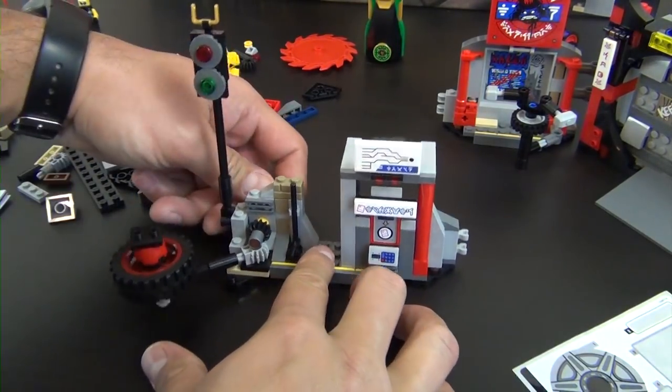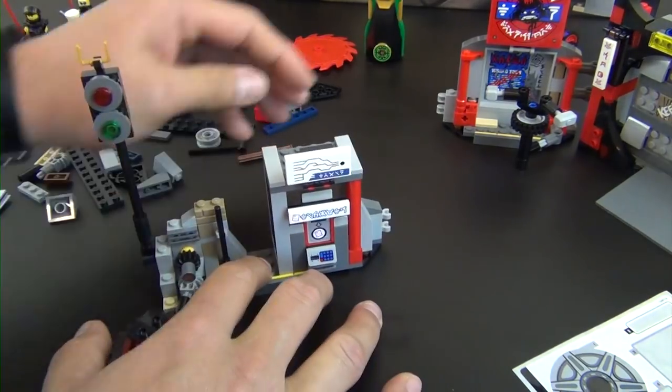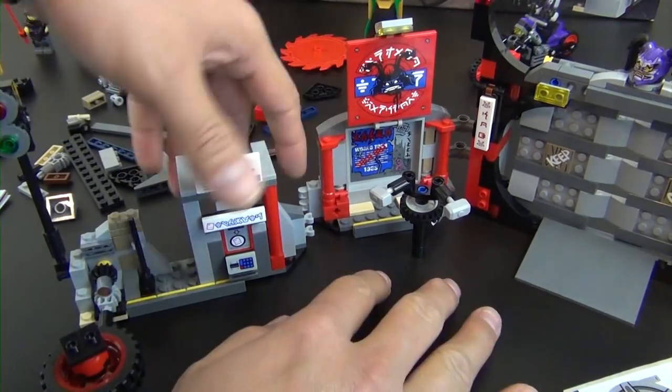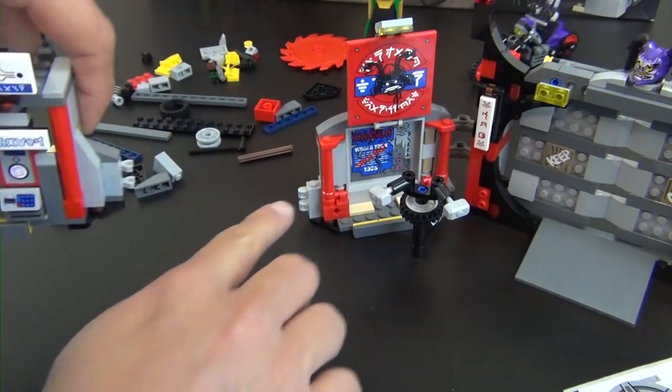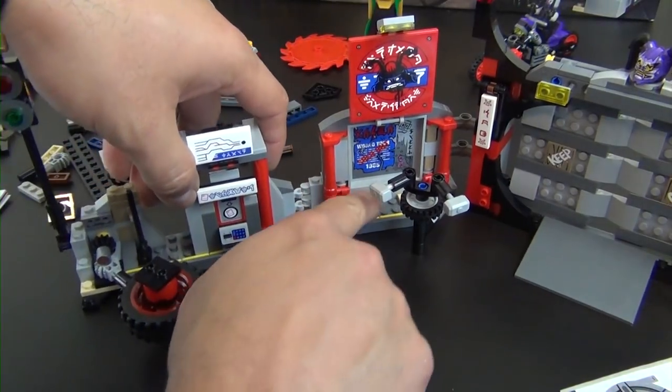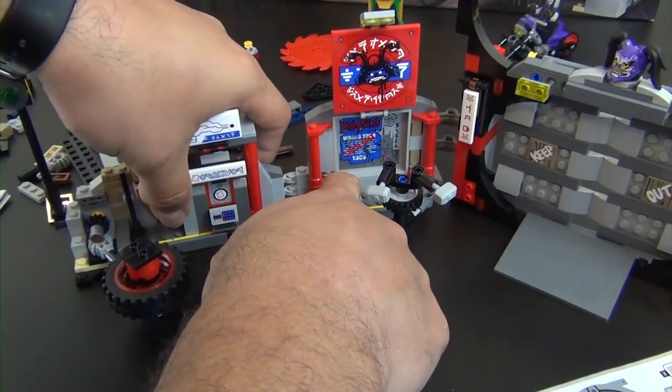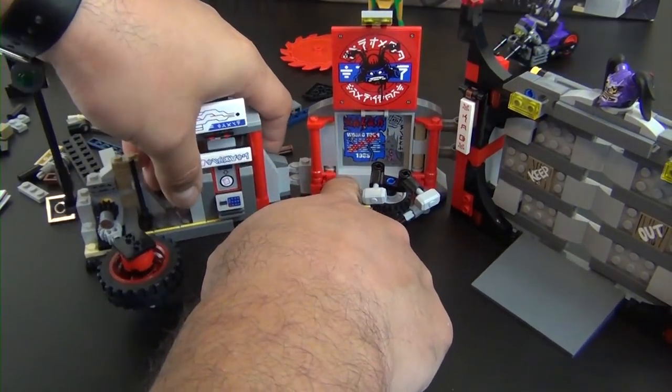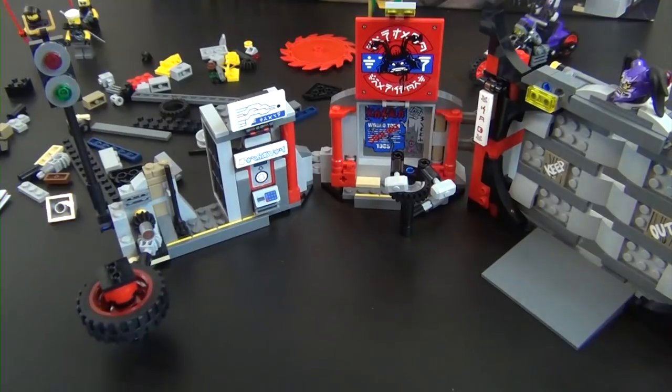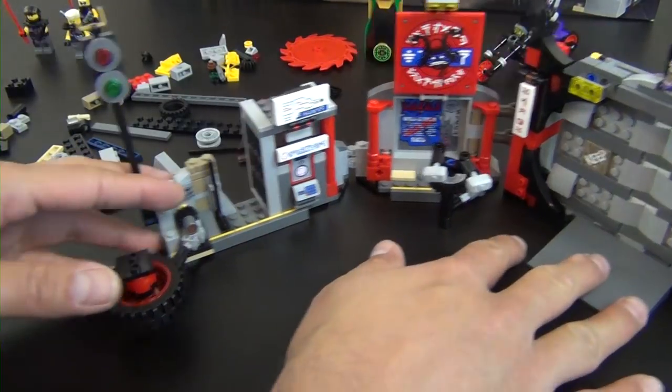Alright, so there's our next little portion. So this one, we're actually using these clips to connect to these little bar pieces that are sticking out over there. So carefully slide it on there. There we go. That's our next part of the headquarters.